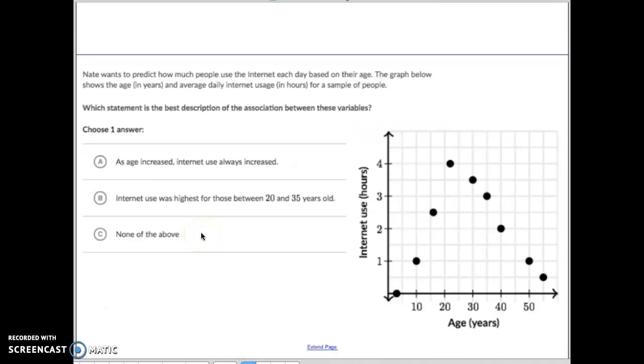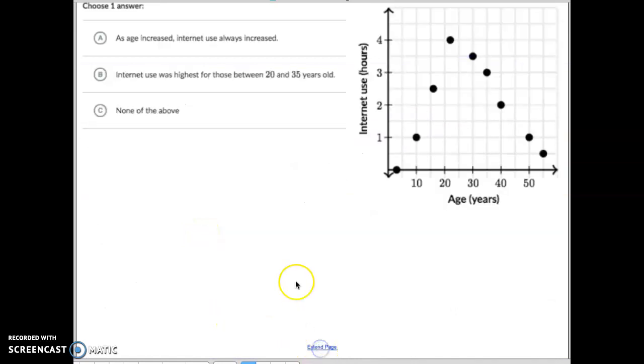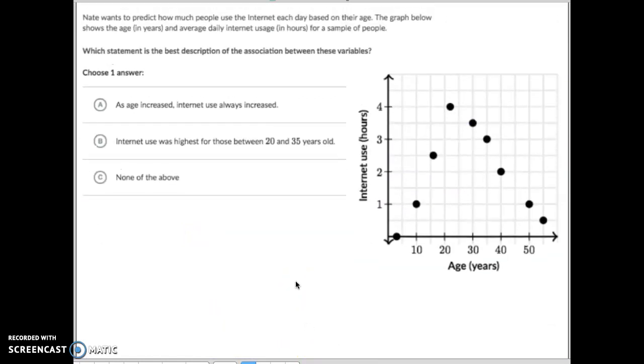Let's do one more. Okay, so we've got this one right here. This graph looks like how old you are and how much you use internet in hours, number of hours. When you look at this one, it kind of goes up and then it goes back down right here.